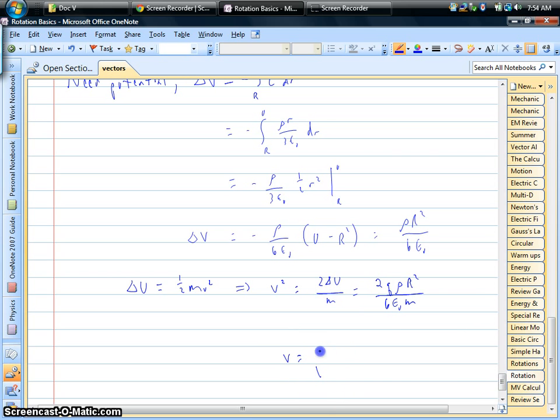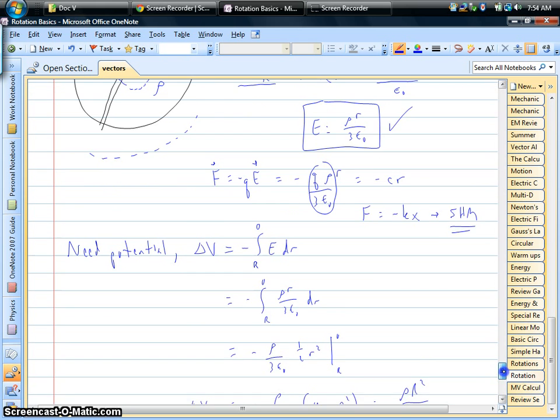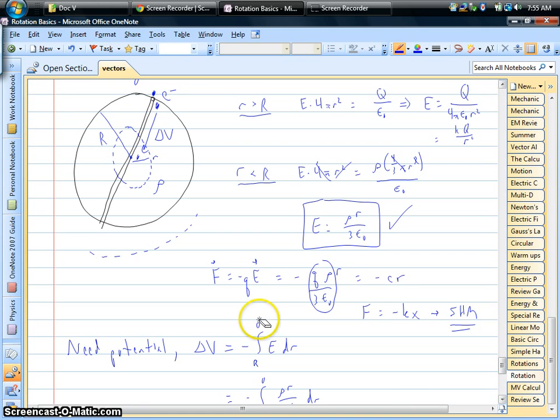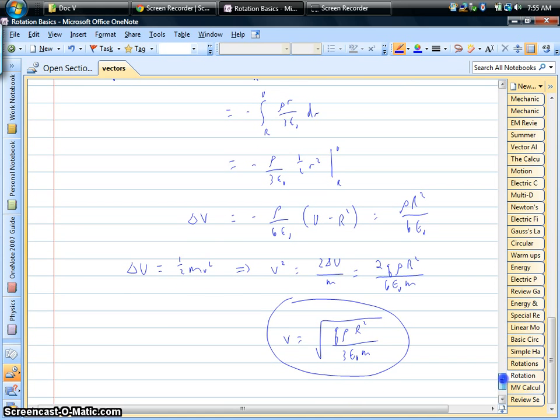The speed at the center is going to be just the square root of that. See, two over six is a third, so the charge of the electron, the density, the radius of the sphere squared all over three epsilon and the mass. So we can do things like that. And we could actually do this, we could change our limits, we could find our speed anywhere in the tunnel just by changing from the surface to the center. We could go from the surface to any radius that we want inside there, use conservation of energy and figure out our speed.